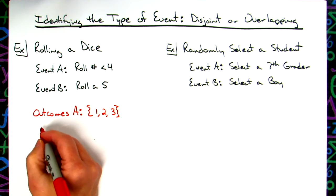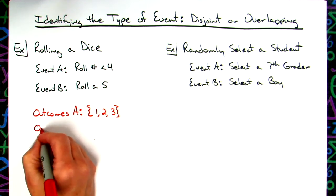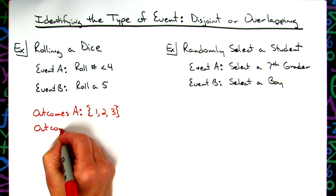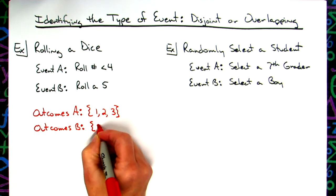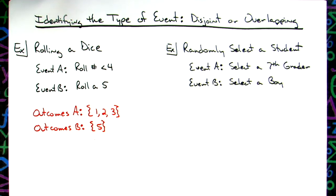Now, rolling a five for event B means my outcomes for event B is only a five. Very specific—roll a five.